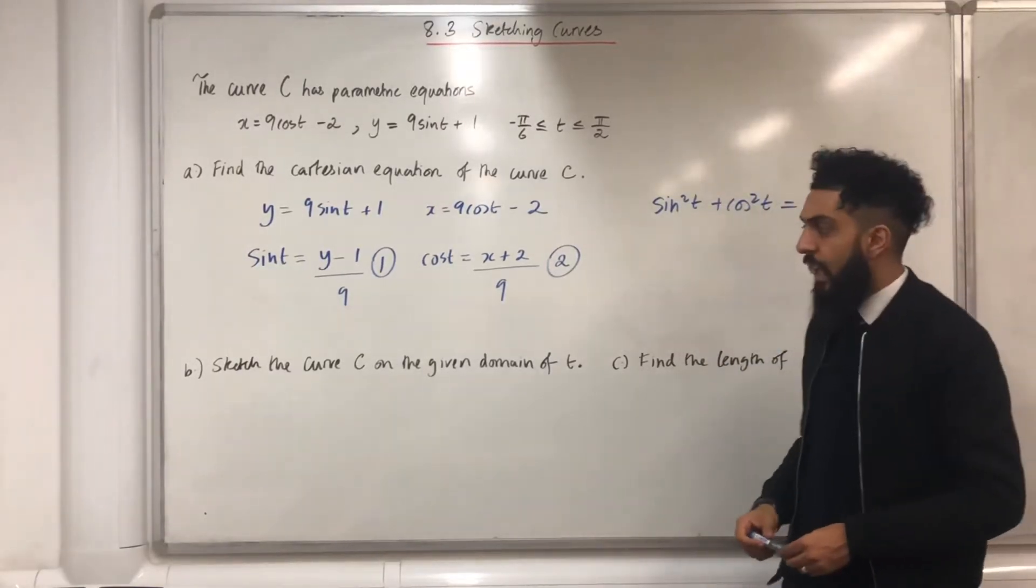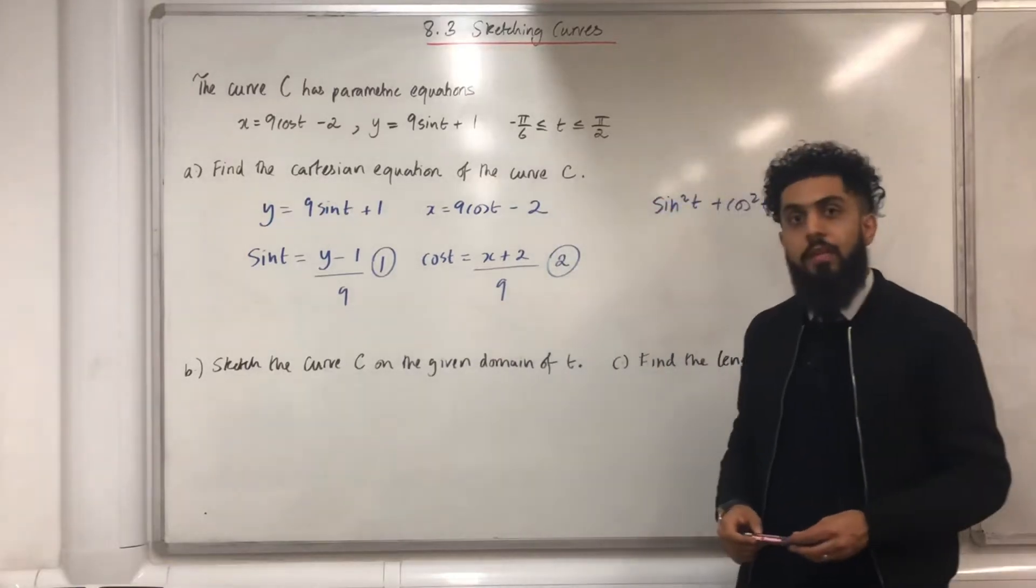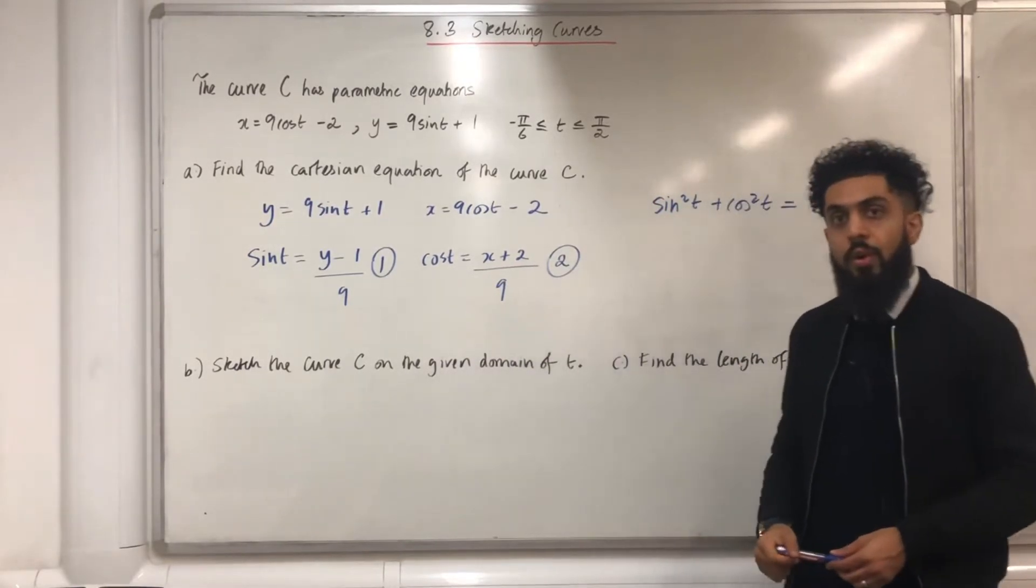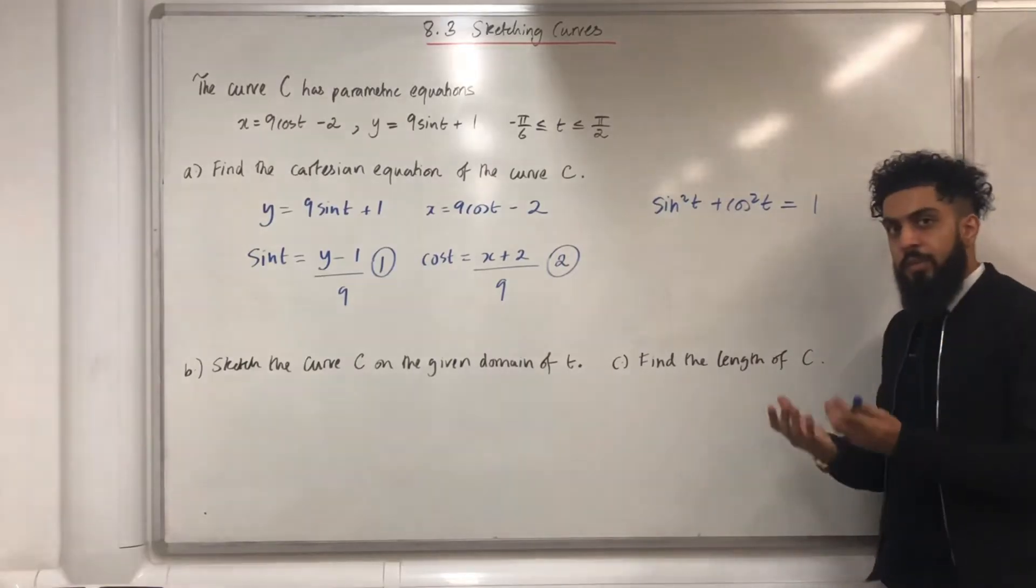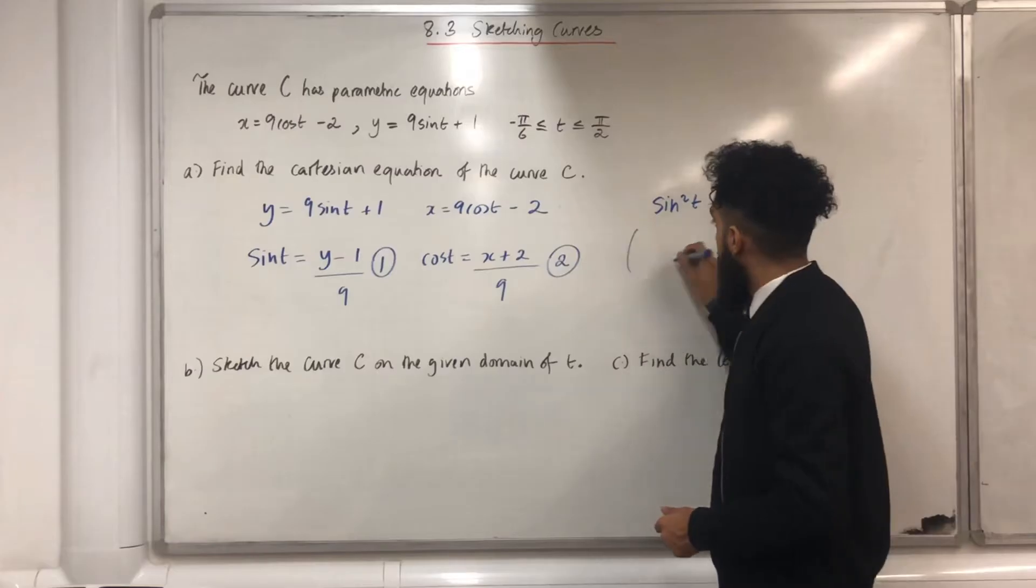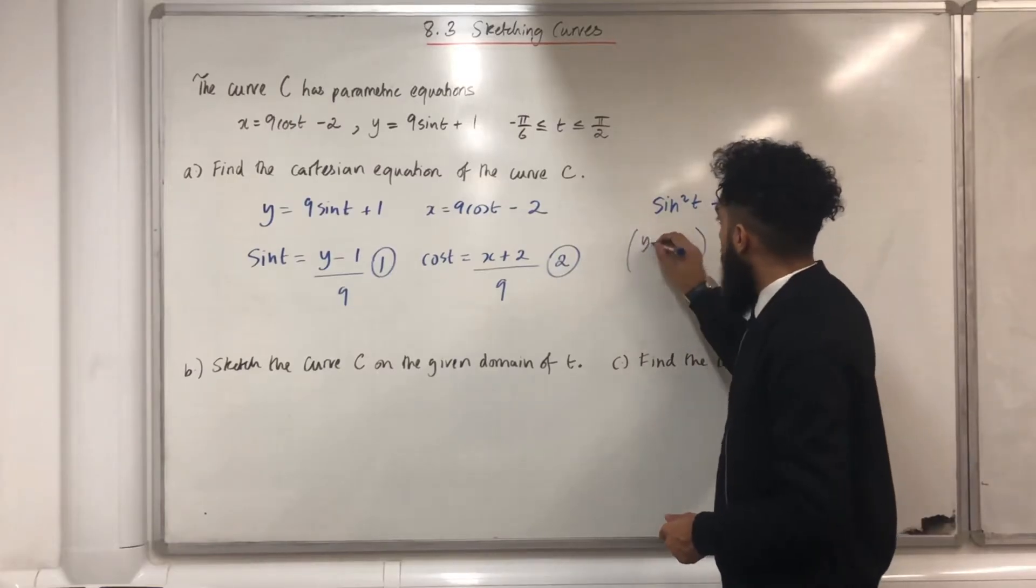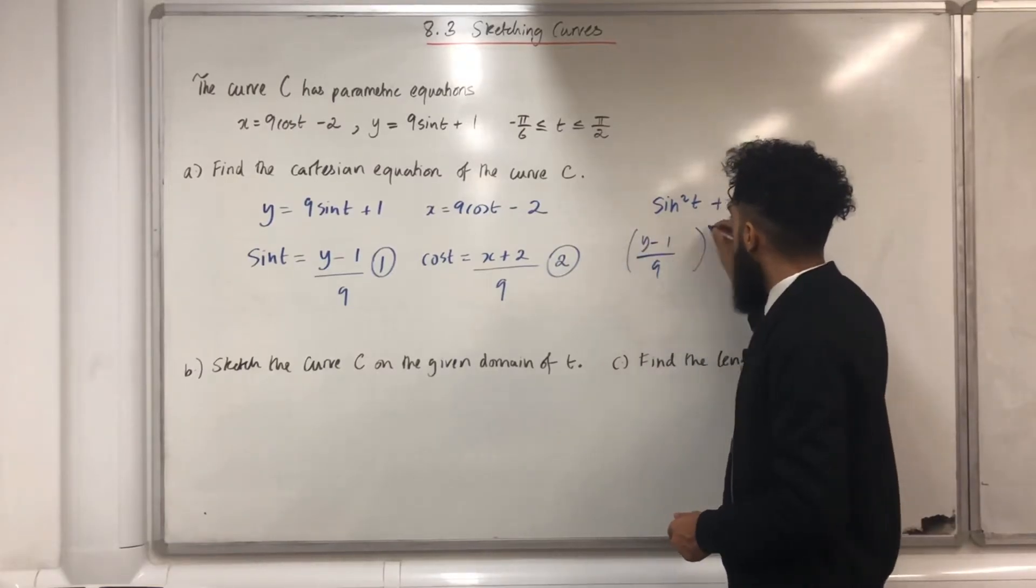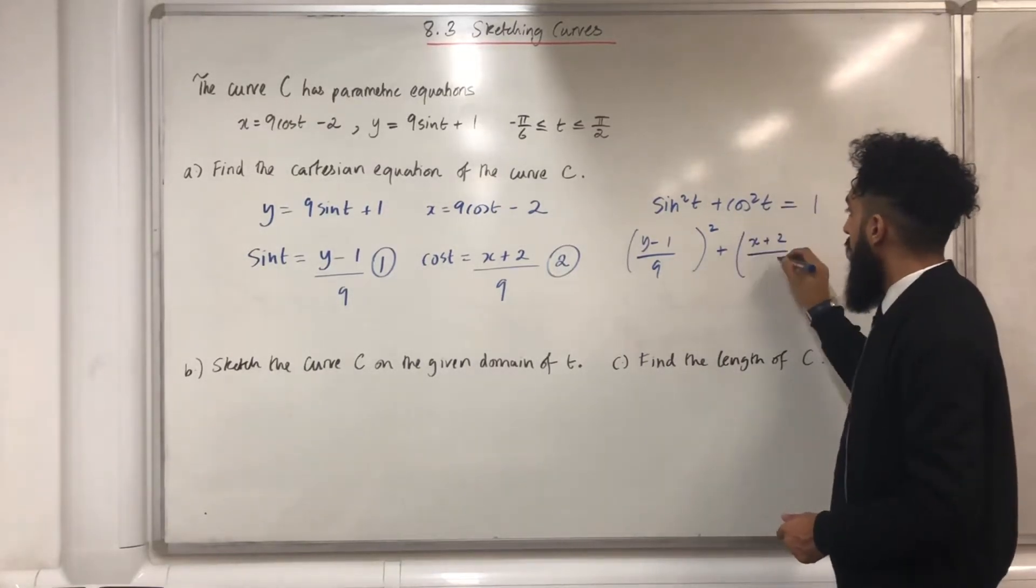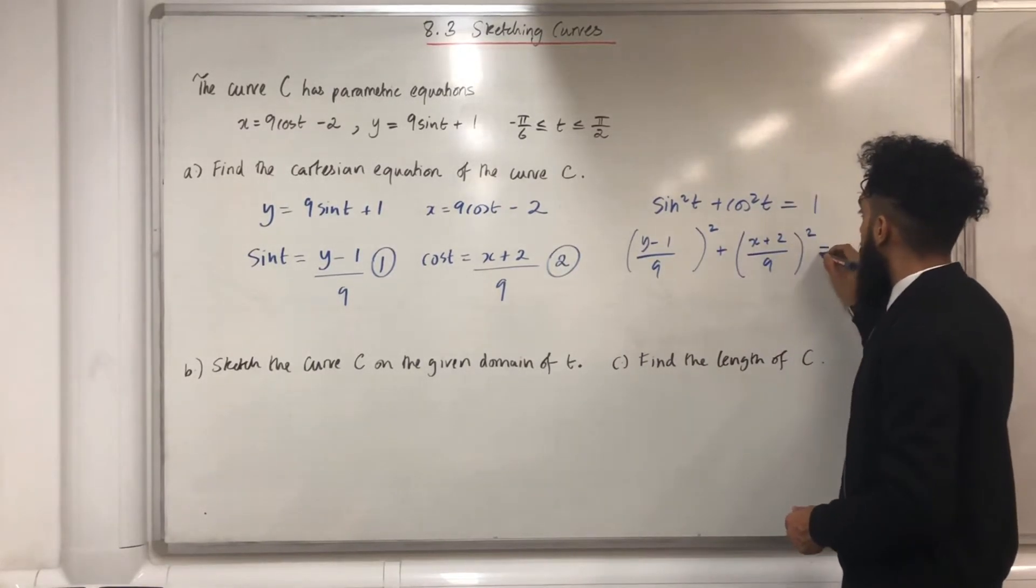I know what sin t is equal to. It is y minus 1 all over 9. I know what cos t is equal to. It is x plus 2 all over 9. So if I carry out my substitution, I obtain the following result. Y minus 1 all over 9 squared plus x plus 2 all over 9 squared equal to 1.